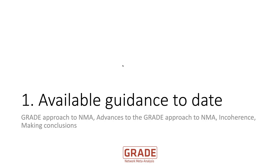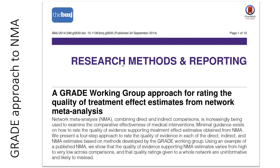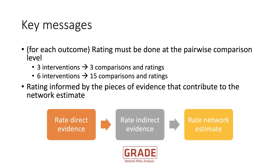Regarding available guidance to date, I'll briefly cover four things. For those not familiar with GRADE development for Network Meta-Analysis, this is the first paper that discusses the GRADE approach to NMA. It was published in 2014 in the BMJ. The key message is that, just like for each outcome in traditional meta-analysis, we have to make a rating of the certainty of the evidence for each pairwise comparison. If we have three interventions, we will have three comparisons and therefore three certainty ratings — one for each comparison.